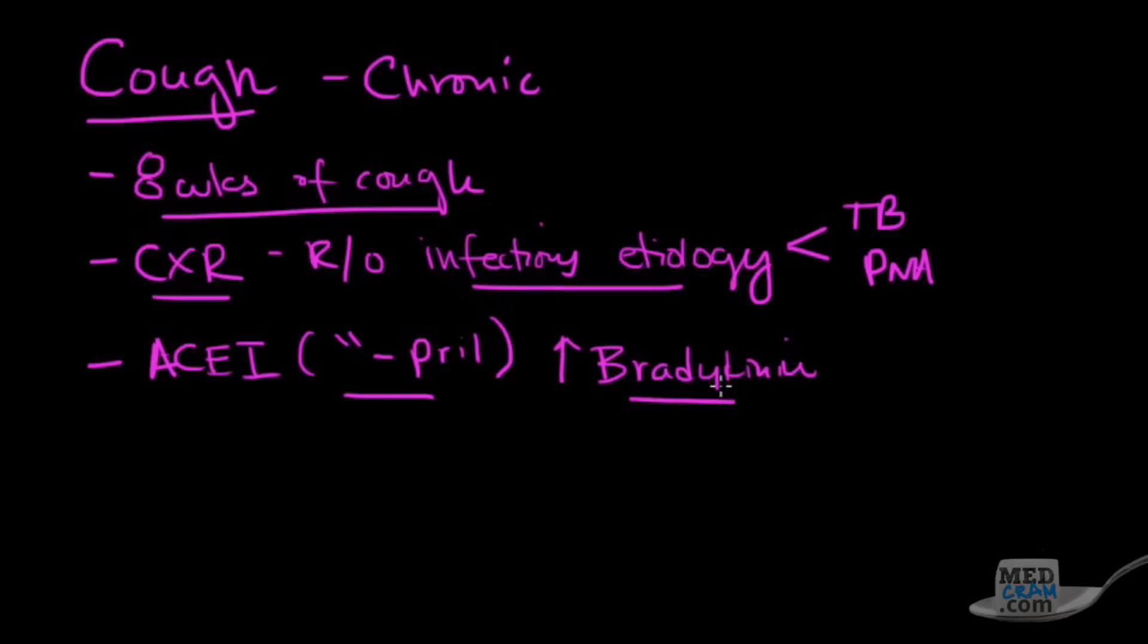These ACE inhibitors can cause cough by increasing bradykinin. So really, if somebody's got a chronic cough that you're trying to work out on a test, the first thing you want to do is make sure you've got a chest x-ray to rule out infectious problem, and then look at their med list to make sure they're not on an ACE inhibitor. I would say about 30% of patients with an ACE inhibitor are going to have some sort of chronic dry cough.